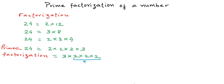So 2 will always appear 3 times and 3 will always appear once in the prime factorization of 24. We often write prime factorization in the form of exponents, so we can write this as 2 to the power 3 into 3 to the power 1.